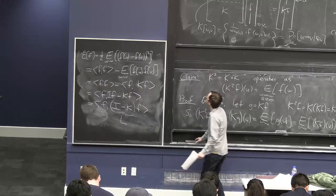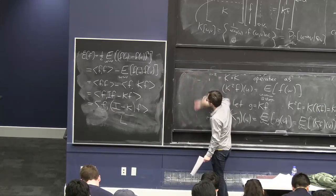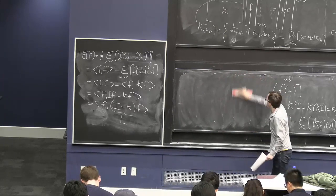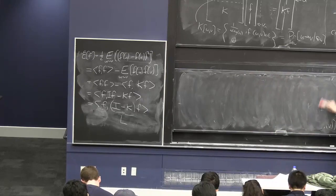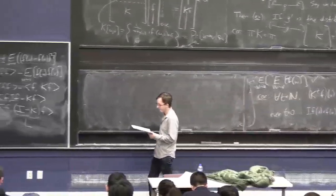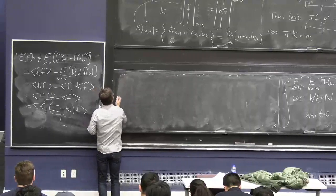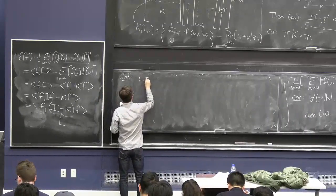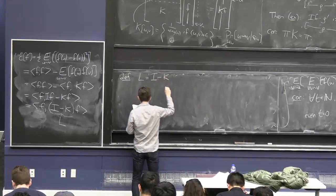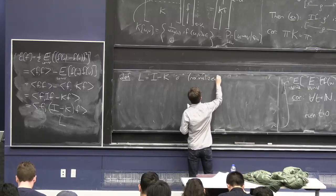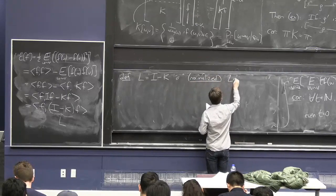This differs a little bit from some people's definitions. Maybe they would call this the normalized Laplacian, so perhaps I'll call it that too. If you've ever heard discussion of graph Laplacians as a key player in spectral graph theory, well, now you've met the object at hand. So this L, the identity matrix minus K, is the normalized Laplace matrix or operator for G.